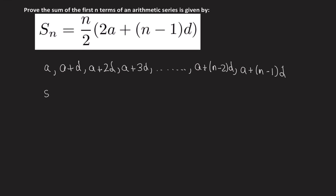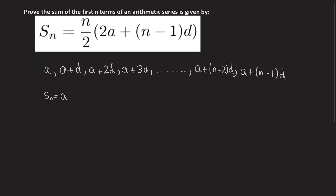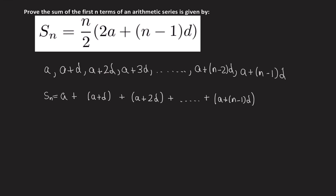If we call the sum of this series Sn, then to find the sum we need to add up every term: a, plus (a plus d), plus (a plus 2d), carrying on all the way to the last term which is a plus (n minus 1)d.